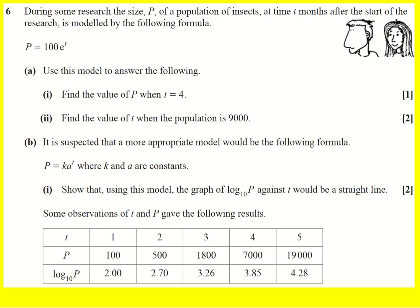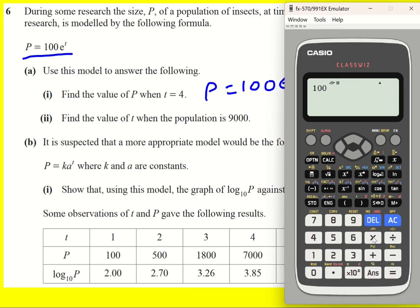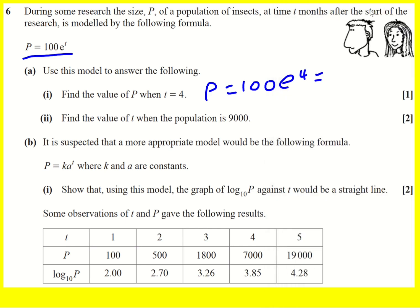Log question to contend with here. The population of insects t months after the start of some research is modeled by p equals 100 e to the t. First up we're asked to find the value according to the model of p when t equals 4. So it's p equals 100 e to the 4. That's an exact answer but this is a model so we want to work three significant figures. Put that in the calculator 5459.8, which to three significant figures will be 5460.